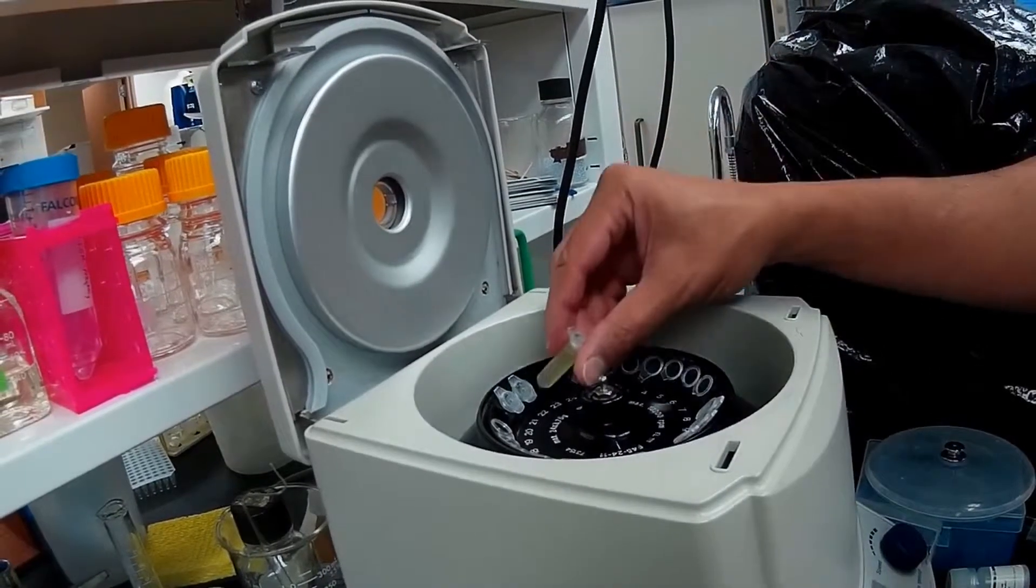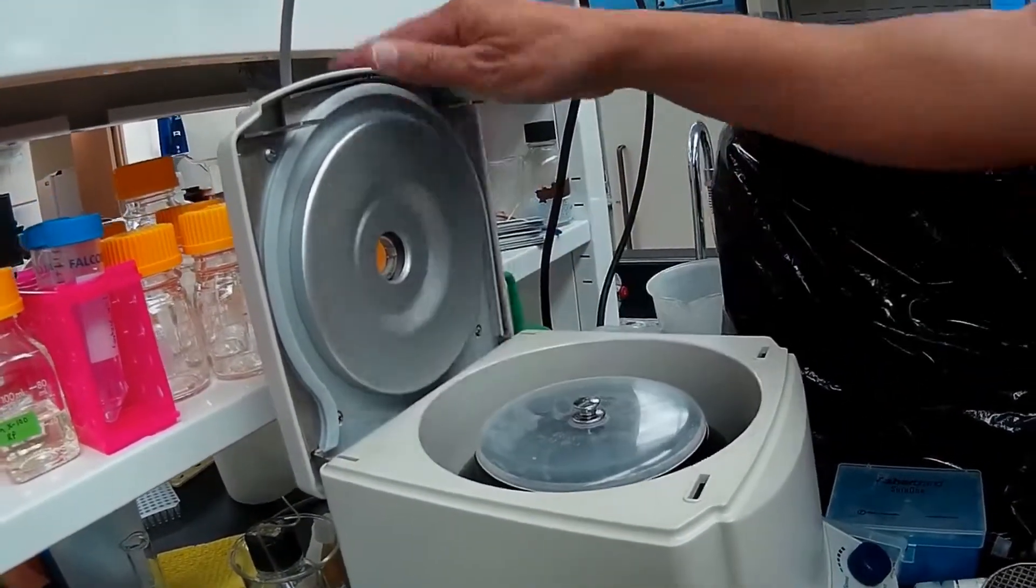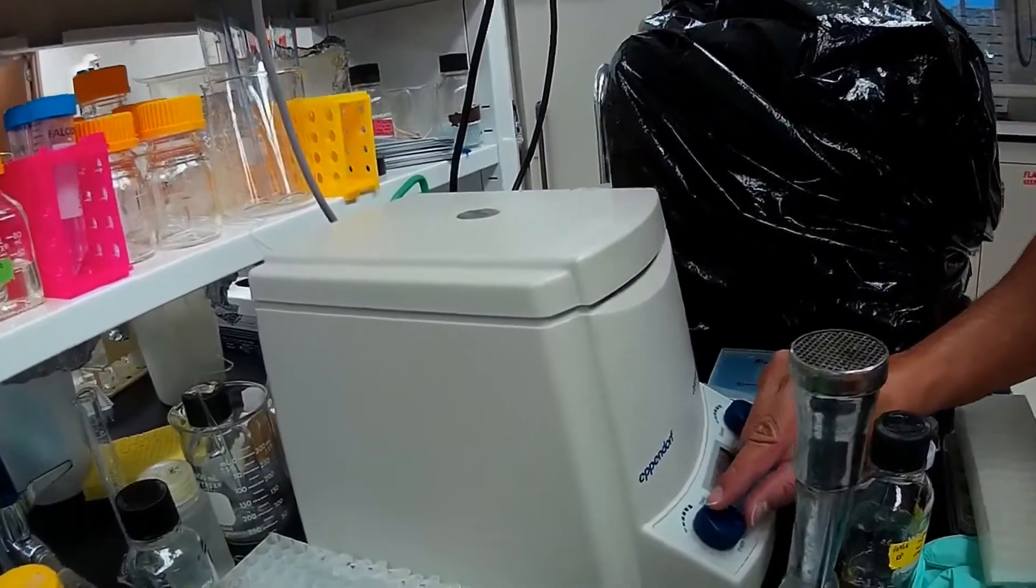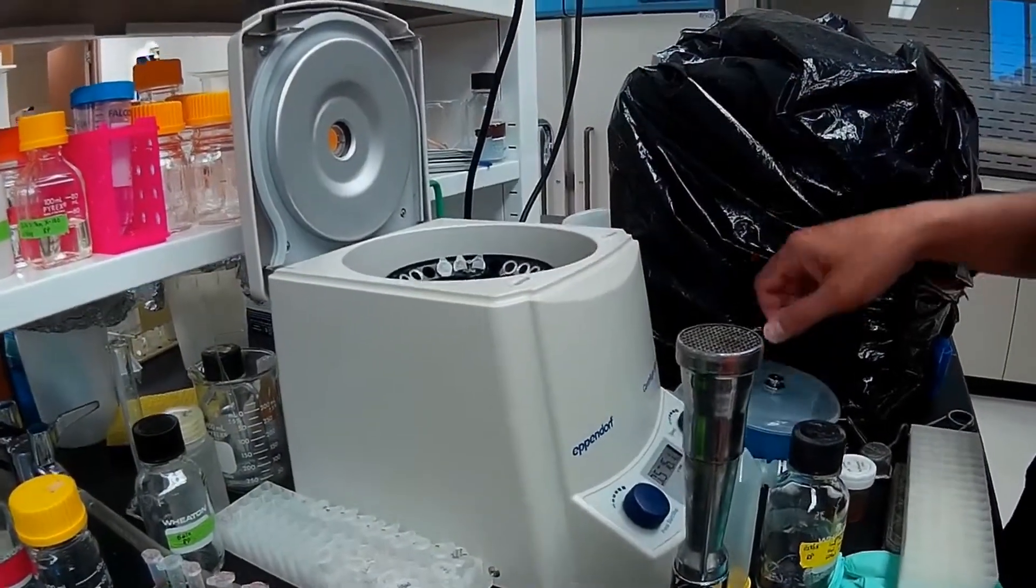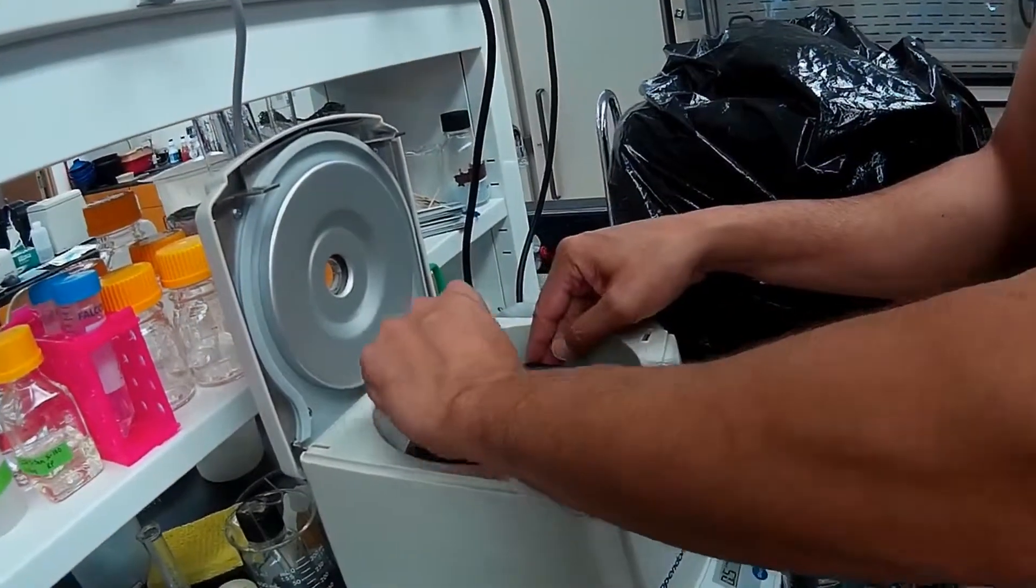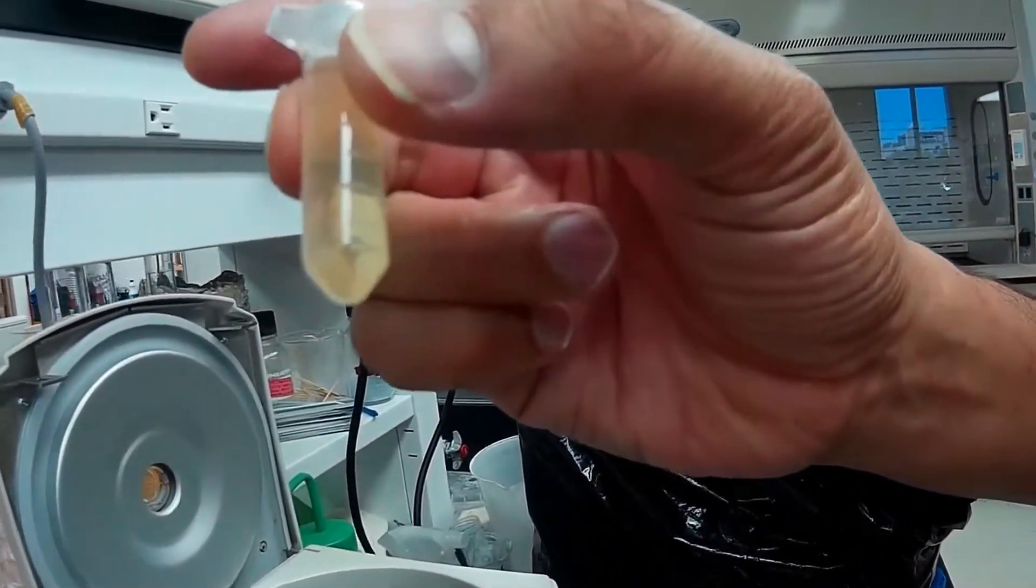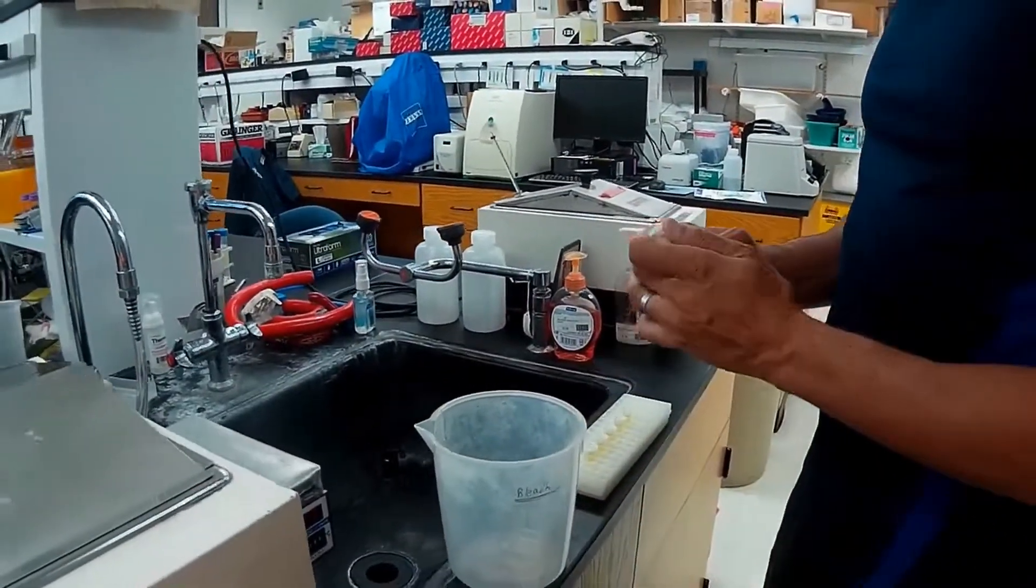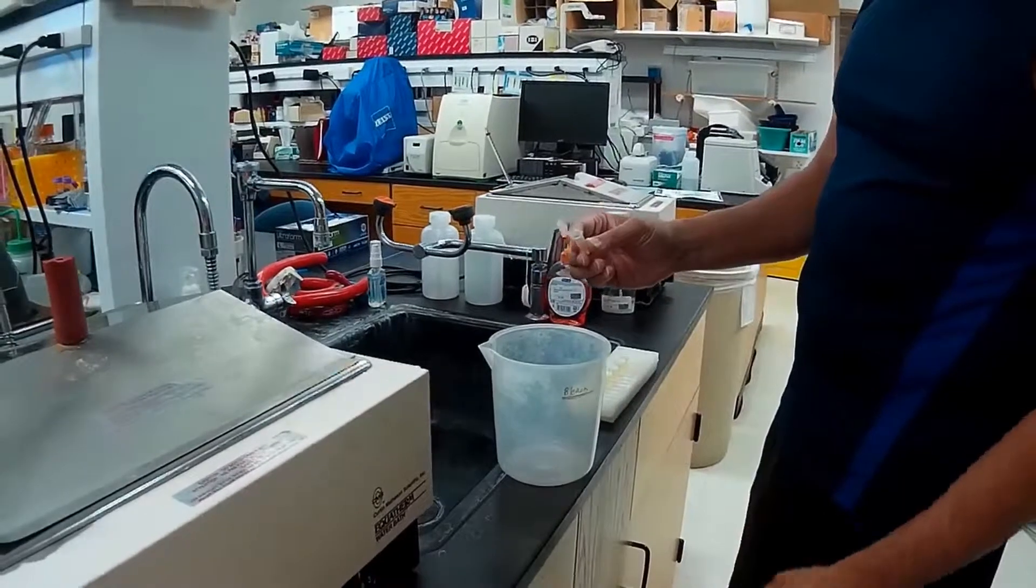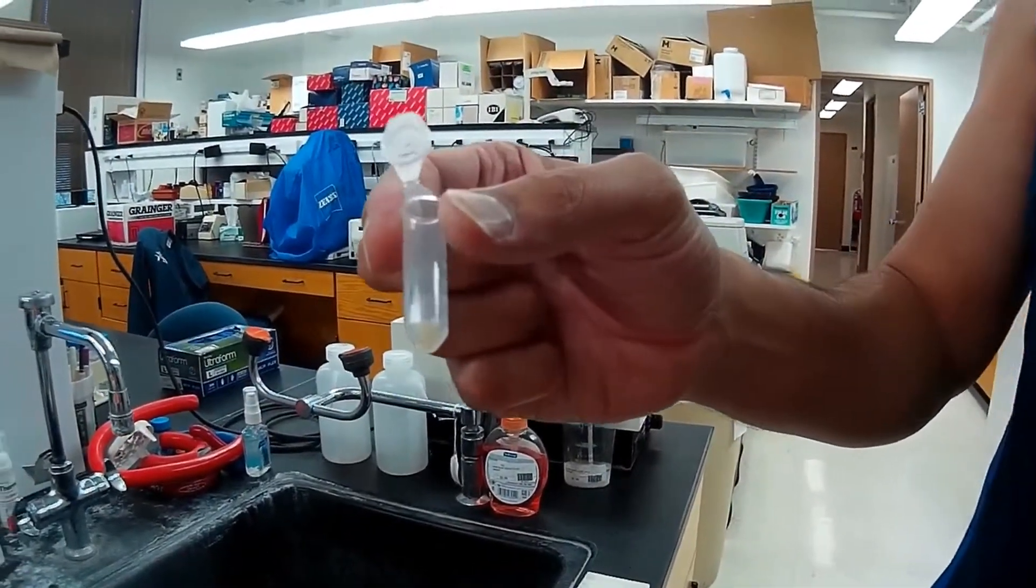The cultures are spun in the centrifuge for 30 seconds, max speed. You can see the LB is clear and the pellet is at the bottom. The supernatant is discarded and will be bleached later. You can see we have an E. coli pellet there.